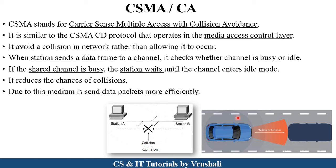Let's take another example. Suppose there are two vehicles using the same road at the same time, so there are chances of collision. But by maintaining an optimum distance between the two vehicles, they avoid the collision. This same technique is used in computer networks. That's why CSMA/CA protocol works efficiently in computer networks.